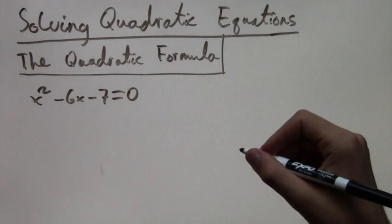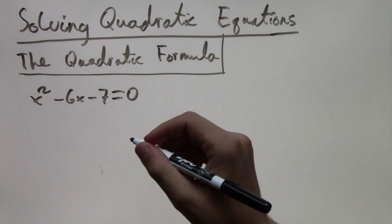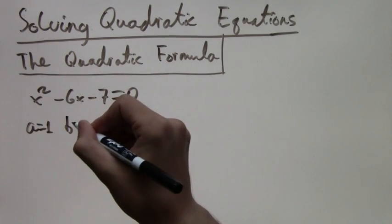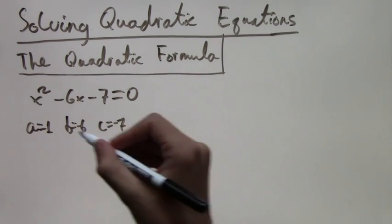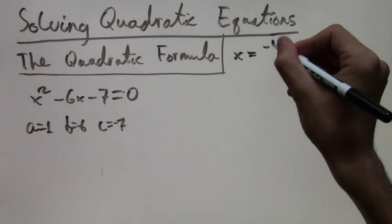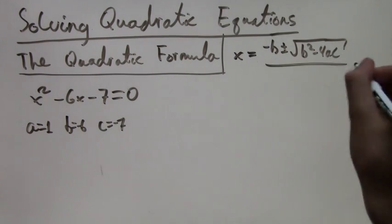So let me rewrite the quadratic equation since I erased it before. But first, let's take a look at what our a, b, and c are. We have 1, negative 6, and negative 7. We just drop them down from the equation above. And here's the formula again: negative b plus or minus square root of b squared minus 4ac all over 2a.